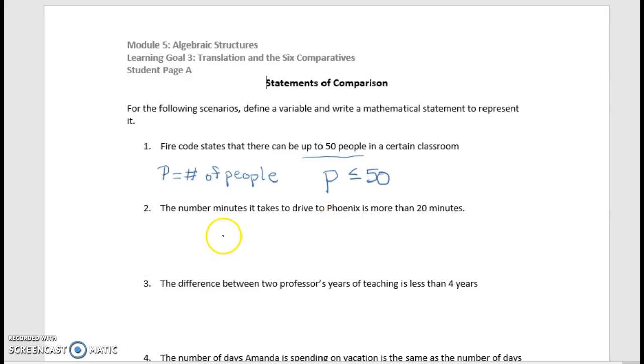If we want to look at number two here, the number of minutes it takes to drive to Phoenix is more than, and again, in comparative statements we're looking for is more than, so that makes it a comparison. If we just had more than, then we have a subtraction problem. So this time we're talking about the number of minutes, so maybe we'll use the letter M equals the number of minutes. And you can elaborate that, the number of minutes to drive if you would like, or just the number of minutes, and this time we need to know that the number of minutes is going to be more than, so is more than 20.